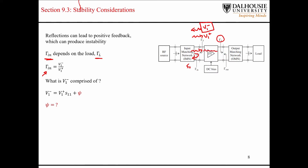If all of the energy that was transmitted through the amplifier stage was being transferred into the load and none of it made its way back to the input, then obviously the input reflection coefficient would just be that S11 parameter. But that's not the case — we know that there's mismatch at the output matching network, and some of that energy makes its way back. So the expression is a little bit more complicated than just this.